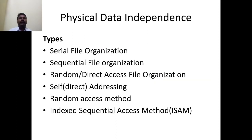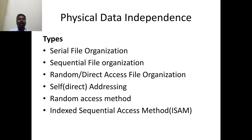In physical data independence, the following file organizations are available: first, serial file organization; second, sequential file organization; third, random or direct access file organization; fourth, self or direct addressing; fifth, random access method; and sixth, indexed sequential access method. You may ask what is file organization — it is simply how you are storing and organizing a file, which method you are using. A file is the smallest storage unit in the system.